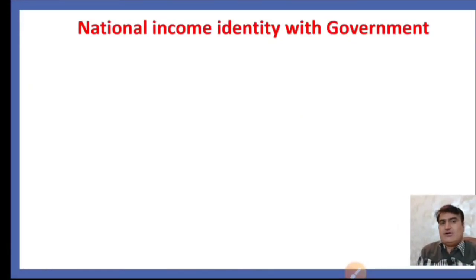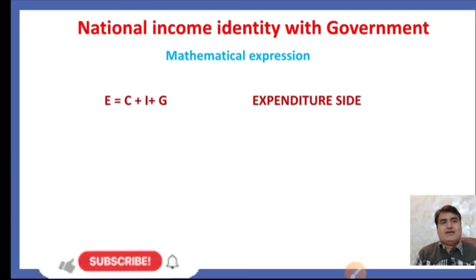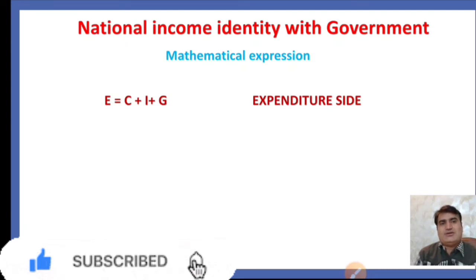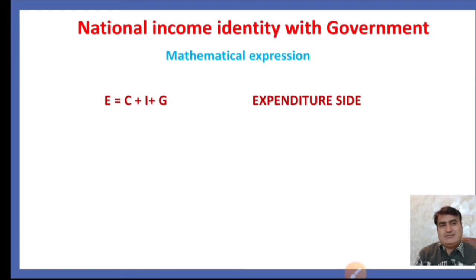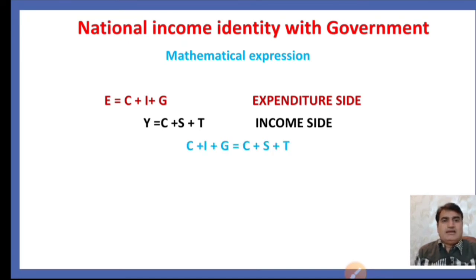The national income identity with government involves a mathematical expression in the saving-investment identity. Under the two-sector economy, expenditure equals consumption plus investment, with no government. In the three-sector economy we add G, indicating the government. So on the expenditure side: Y = C + I + G. From the income side: Y = C + S + T. By equating both sides — since expenditure must equal income — we get: I + G = S + T.